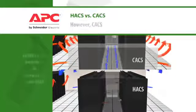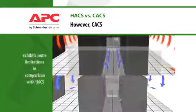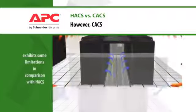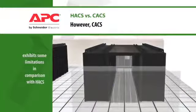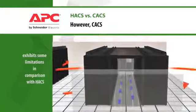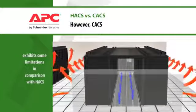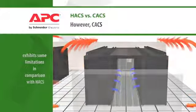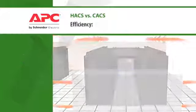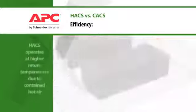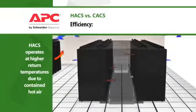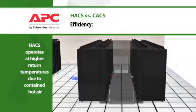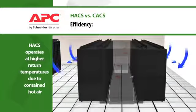While both the hot aisle and cold aisle systems help solve today's data center challenges, the cold aisle containment exhibits some limitations in comparison with the hot aisle system. With the hot air contained, the in-row cooling units are able to capture all of the heat from the IT equipment.